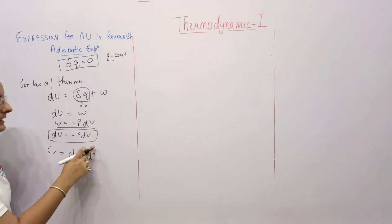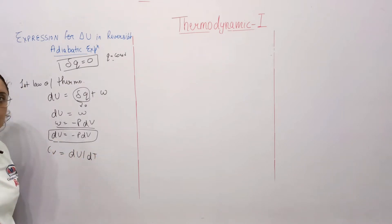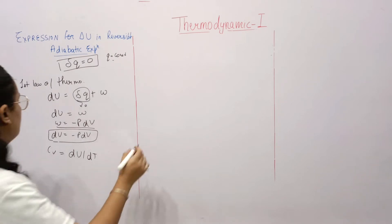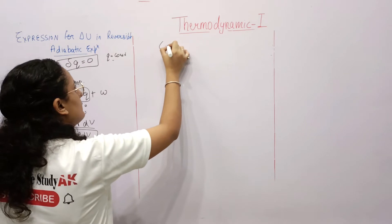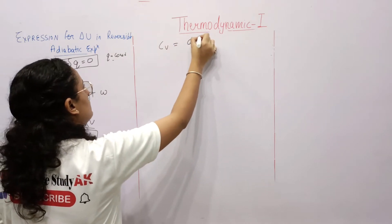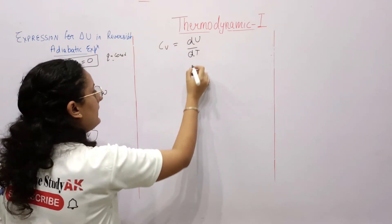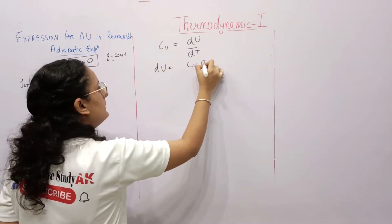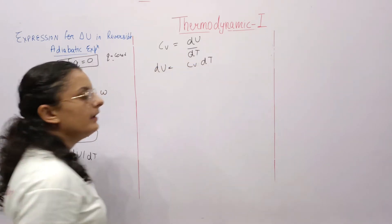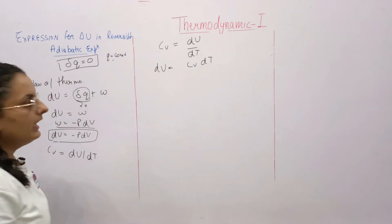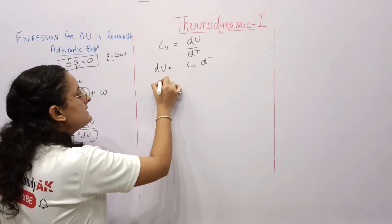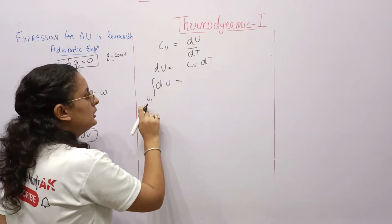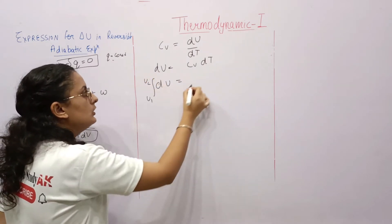The relation is: cv = dU/dT — change in internal energy with respect to change in temperature. Rearranging: dU = cv·dT.